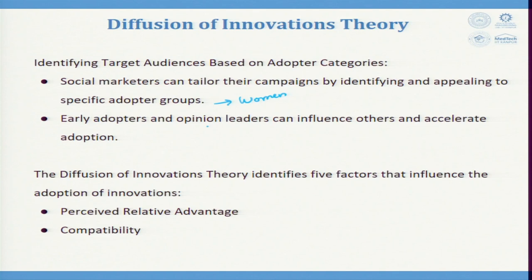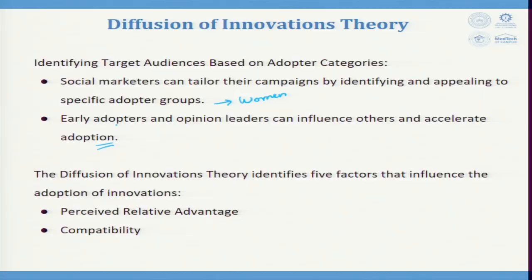Early adopters and opinion leaders can influence others and accelerate adoption. For example, a principal can make an influence through teachers to children. The class teacher is always a hero for a child until class 5 — the child comes home and says 'my teacher said this, you are wrong' to the parent. So early adopters and opinion leaders can influence others and accelerate adoption.